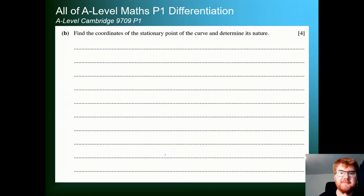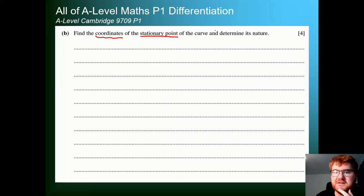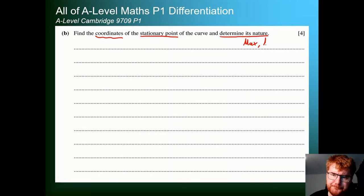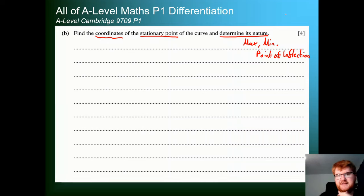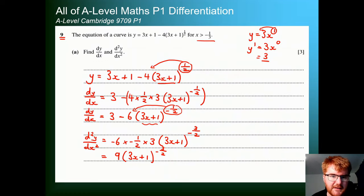On to part B: find the coordinates of the stationary point and determine its nature. 'Determine its nature' means whether it's a maximum, minimum, or point of inflection. As soon as I see 'stationary points', the first thing that comes to mind is dy/dx = 0. We need part A's result and set it to 0. So: 3 − 6(3x + 1)^(−1/2) = 0.